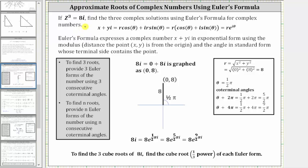If z cubed equals 8i, we want to find the three complex solutions, or three roots, using Euler's formula for complex numbers.